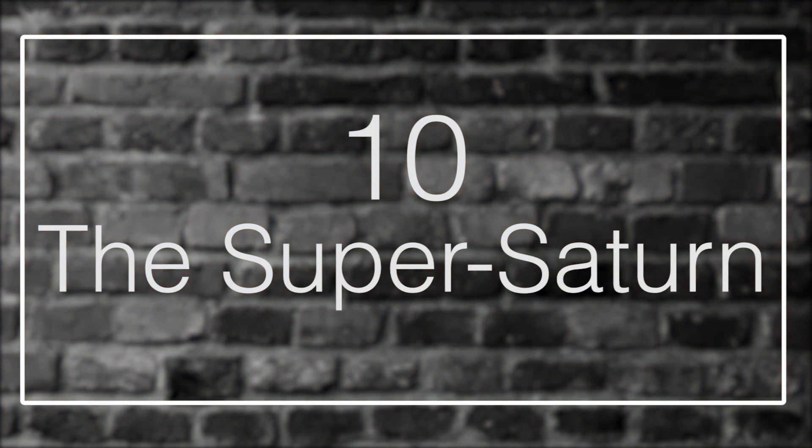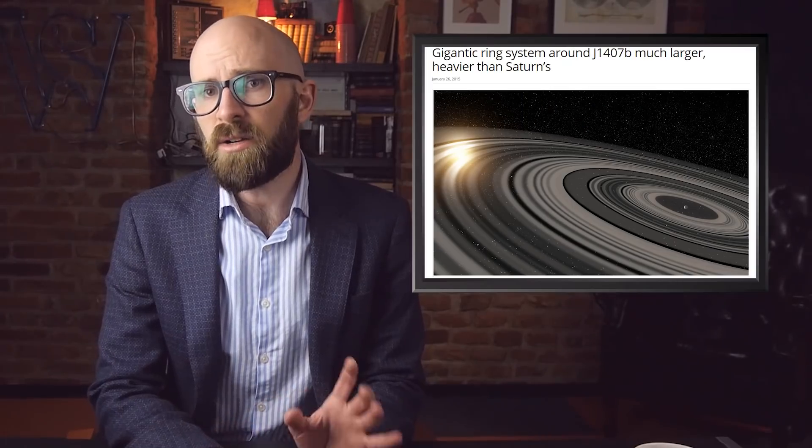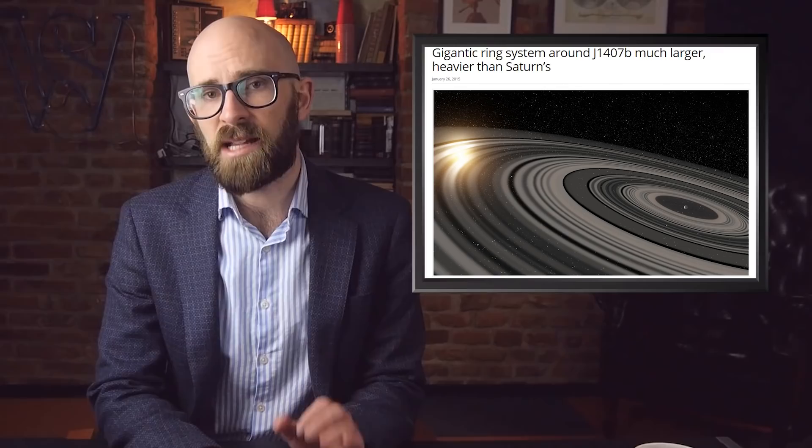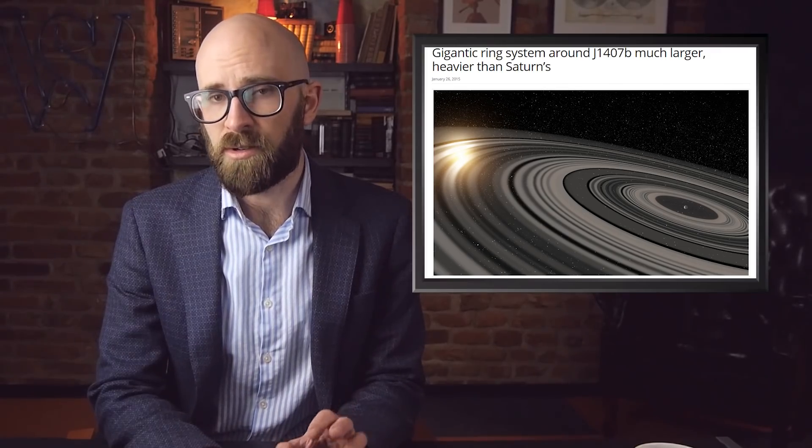10. The Super Saturn. Saturn has long been the most dramatic looking planet in our solar system. The rings around Saturn make it stand out amongst the other planets. But among ringed planets, Saturn takes a backseat to the exoplanet known as J1407b.